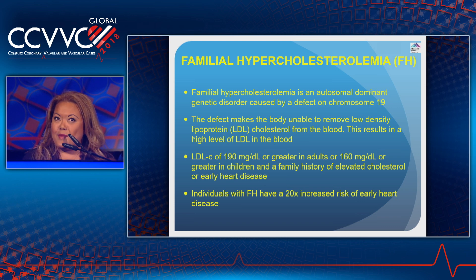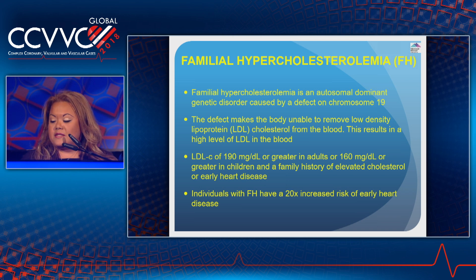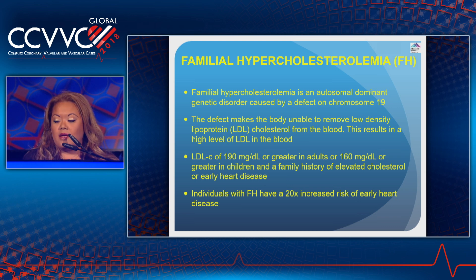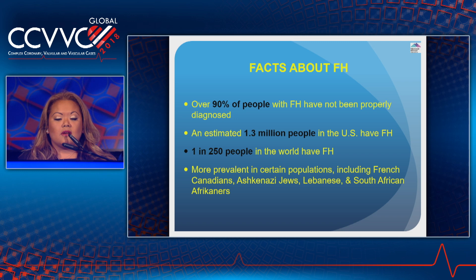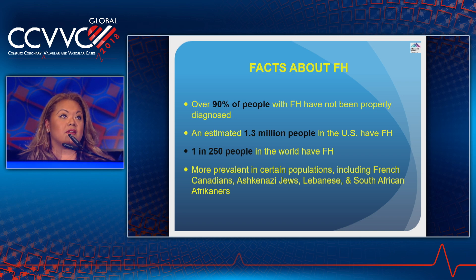Individuals with familial hypercholesterolemia are unable to recycle the natural supply of cholesterol their bodies constantly produce. Elevated plasma levels of LDL-C have consistently been shown to be a risk factor in the development of aggressive and premature atherosclerosis and associated ischemic cardiovascular disease, such as MI and stroke. Familial hypercholesterolemia is identified as an LDL-C level of 190 mg/dL or above in adults and 160 mg/dL or above in children. Over 90 percent of people with familial hypercholesterolemia have not been properly diagnosed — an estimated 1.3 million people in the United States have it, yet only 10 percent have been properly diagnosed.